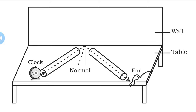Try to hear the sound of the clock through the other pipe by adjusting the position of the pipe so that you can hear a clear sound of the clock. We measure the angle of incidence and reflection. The sound of the clock is clearly heard when the angle of incidence of sound is equal to the angle of reflection of the sound.